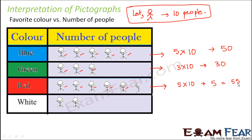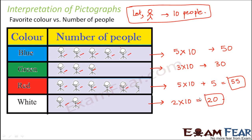What about white? You have two pictures, so that means 2 into 10, that is 20 people like white. So looking at this pictograph, the favorite color for the maximum number of people — 55 is the maximum, so red is liked by most people. Which color is liked by very few? That's white, because only 20 people like white, so white is the least liked color. In this fashion we can interpret pictographs. It is very important to observe what each picture represents — here it was 10 people — and then carefully count how many such pictures you have for each data.